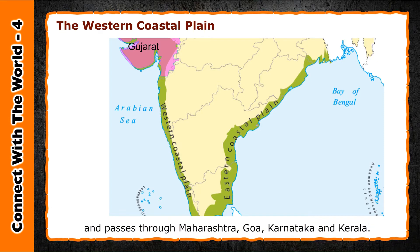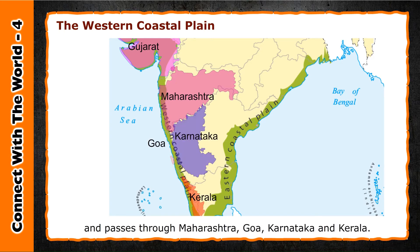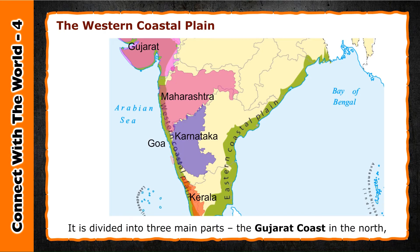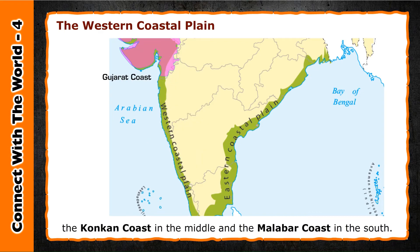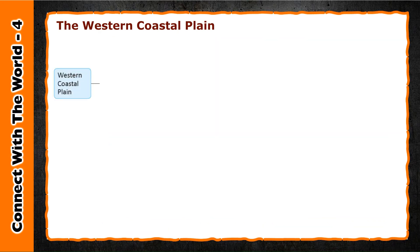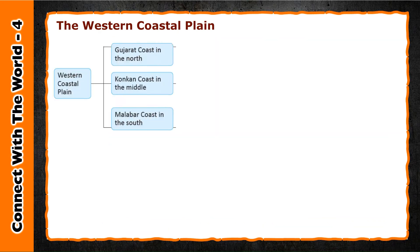The western coastal plain originates from Gujarat in the north and passes through Maharashtra, Goa, Karnataka, and Kerala. It is divided into three main parts: the Gujarat coast in the north, the Konkan coast in the middle, and the Malabar coast in the south.